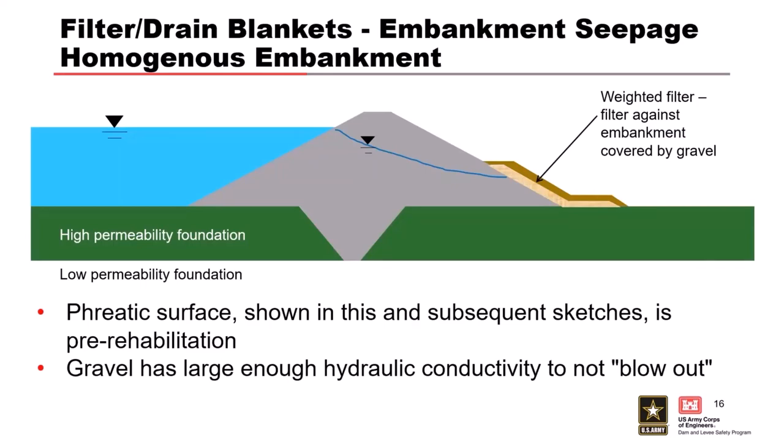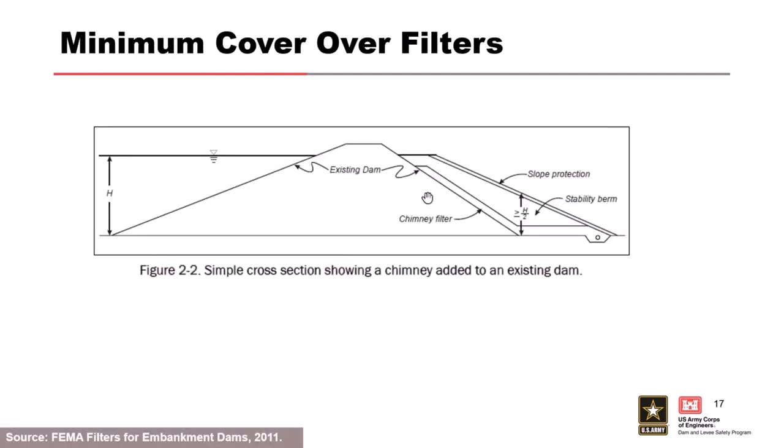The first concept: you've got seepage coming out of the dam, and you do a simple weighted filter against the downstream slope. You put filter sand where seepage is coming out at your downstream toe, maybe a blanket running out a bit, then cover it with gravel or riprap. It's a reverse filter, a weighted filter, so water just seeps out through that rock. This is typically more of an emergency response — you might do something more permanent with pipes and cover, but it's a good first step. You've got to make sure the gravel or riprap doesn't blow out and has enough weight to resist the seepage forces.